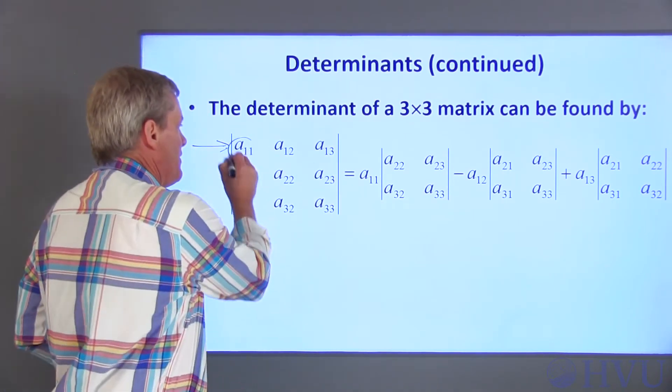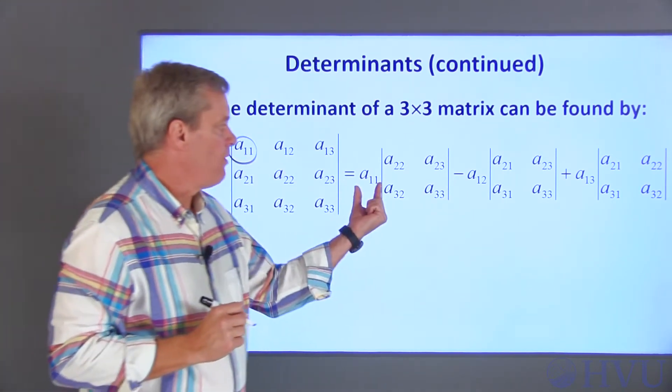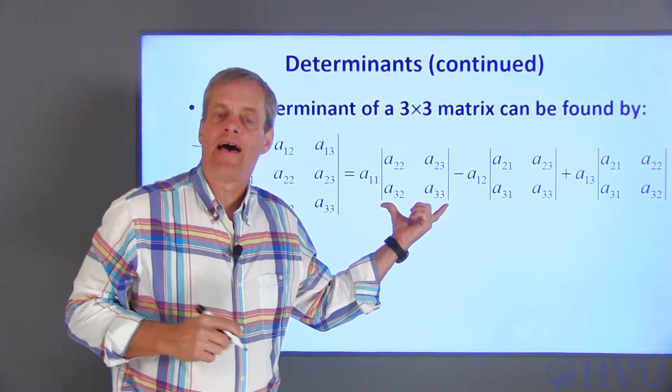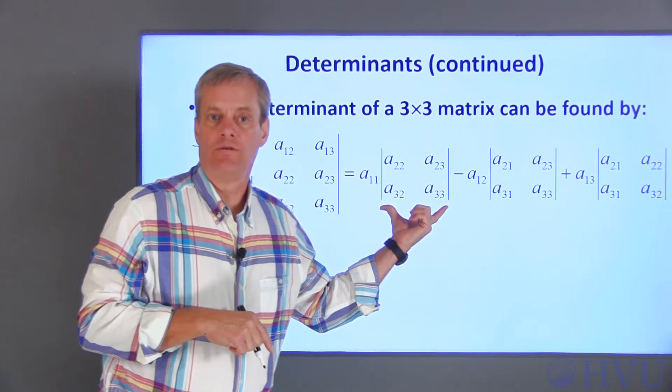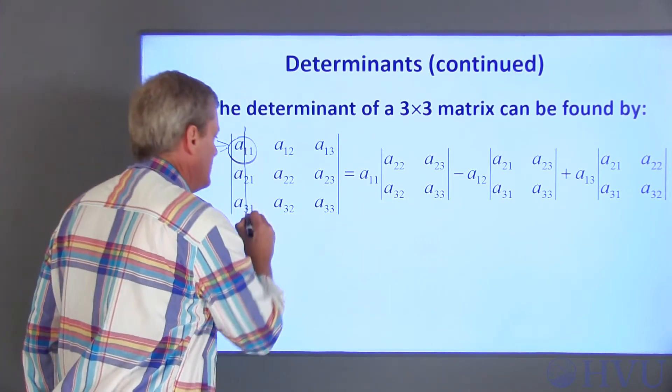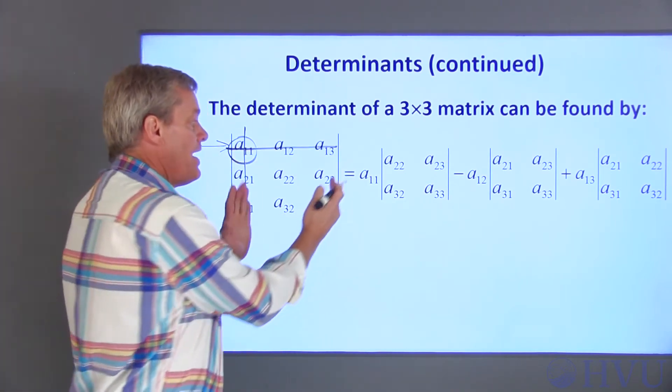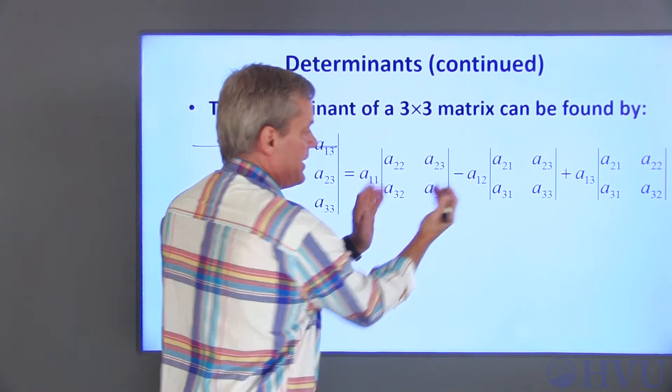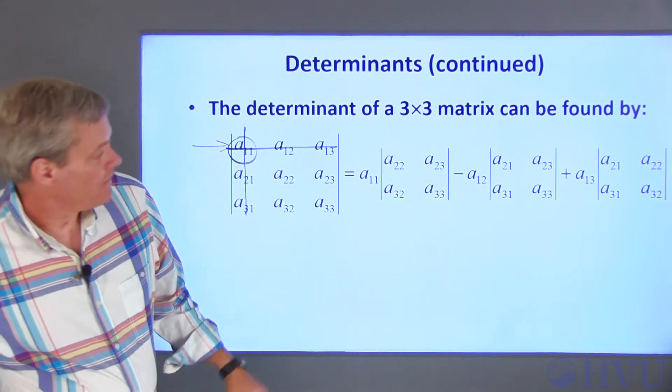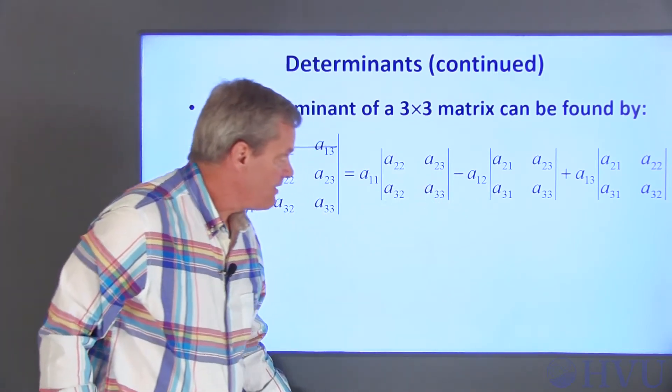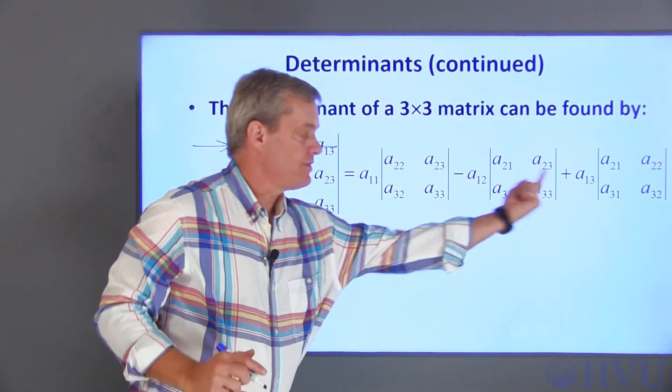Take each element in that row or column, so A11, and multiply that by that element's cofactor. A cofactor is created by eliminating the row and column of the element that you're working with and taking the determinant of the remaining elements. The next contribution is going to be a negative A12. These signs alternate here.